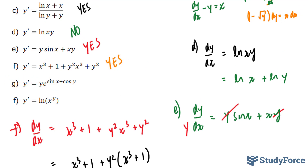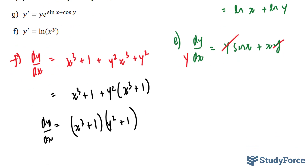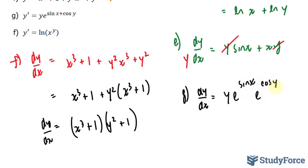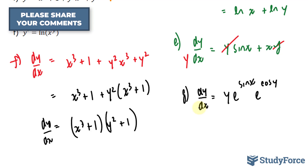Moving on to question (g): y prime is equal to y times e to the power of sine x plus cosine y. Rewriting as dy over dx equal to y times e to the power of sine x, I separate the exponent as e to the power of sine x times e to the power of cosine y. Dividing both sides by y and e to the power of cosine y leaves e to the power of sine x on the right side. Multiplying both sides by dx means this one is separable.